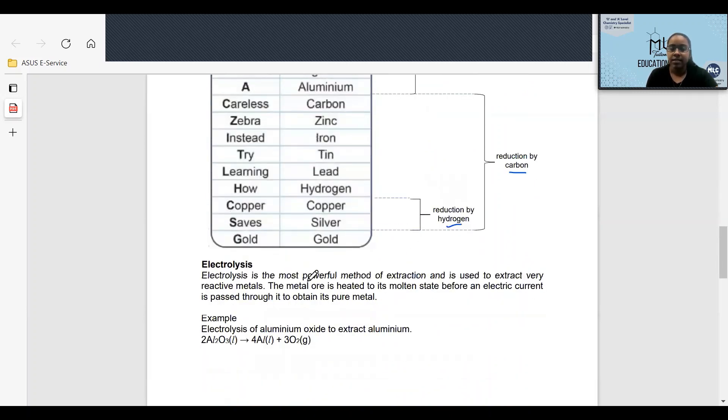For electrolysis, it is the most powerful method of extraction, and it is used to extract very reactive metals. The metal ore is heated to its molten state before an electric current is passed through to obtain its pure metal.